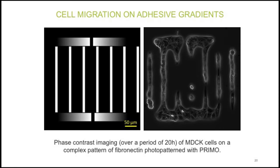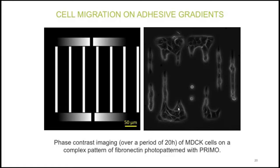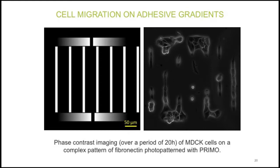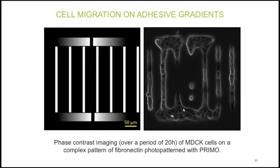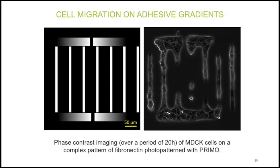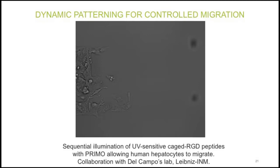One interesting use of this technology is to make protein gradients. Since it uses virtual masks, the system can project levels of gray and create gradients. This example shows how protein density impacts cell migration: vertical lines were grafted with high protein density while horizontal lines have gradients. The movie shows cells preferentially attaching to the high-density protein regions and progressively invading the less-dense adhesive areas over time.